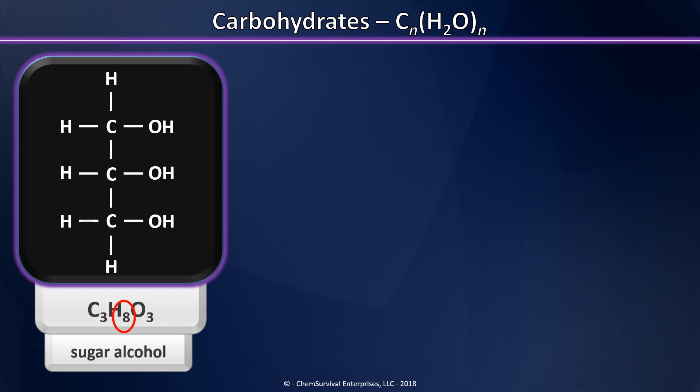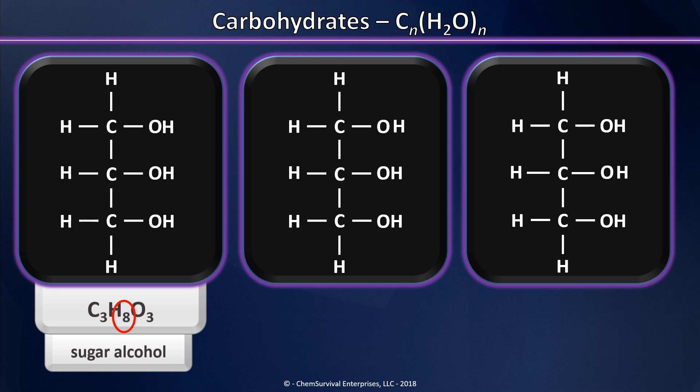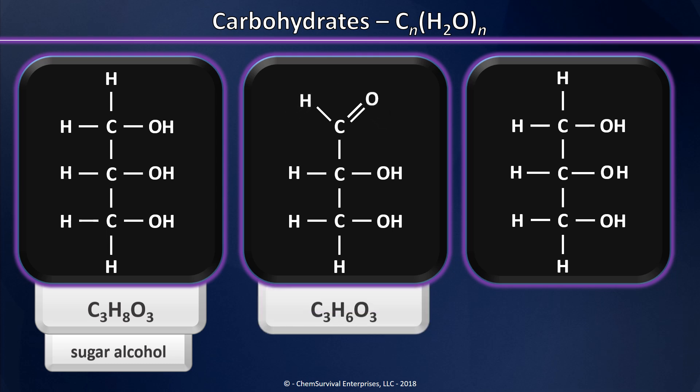To convert glycerin or glycerol into a carbohydrate, I have to remove two hydrogens. I'm going to create a couple of copies — focus on the center copy right now. Let's take those two hydrogens from a terminal carbon, these two hydrogens here. When I do that, I create a new functional group as well as a molecule with the formula C3H6O3, an appropriate formula for a carbohydrate.